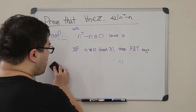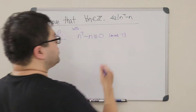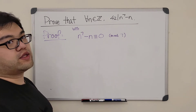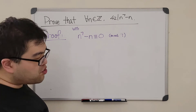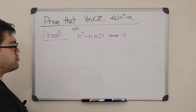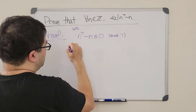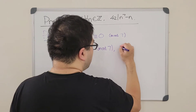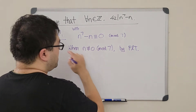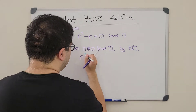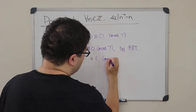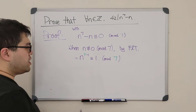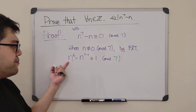There's one more case left: we need to show the expression is divisible by 7. If n is a multiple of 7, then n ≡ 0 (mod 7) and raising to the seventh power still gives zero mod 7, so that case is easy to verify and I'll skip it. For the case when n is not a multiple of 7, we use Fermat's Little Theorem again: n to the 7 minus 1 power is congruent to 1 mod 7, since 7 is prime. That simplifies to n to the sixth power is congruent to 1 mod 7.